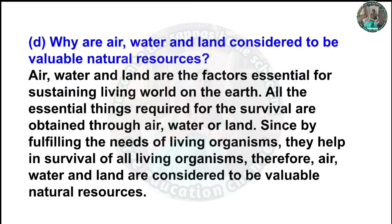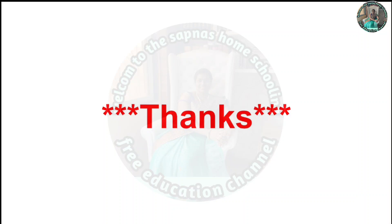D) Why are air, water and land considered to be valuable natural resources? Air, water and land are the factors essential for sustaining living world on the earth. All the essential things required for survival are obtained through air, water or land. By fulfilling the needs of living organisms, they help in the survival of all living organisms. Therefore, air, water and land are considered to be valuable natural resources. Thank you students. If you like this video, please like it, share it with your friends and subscribe to this channel.